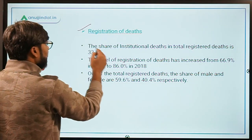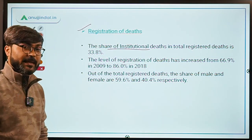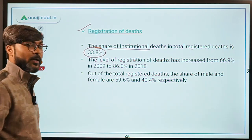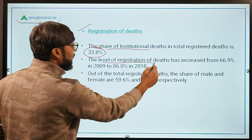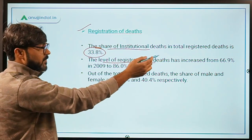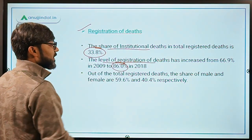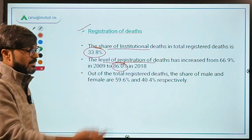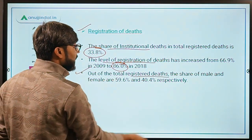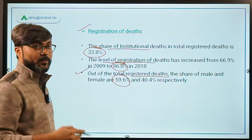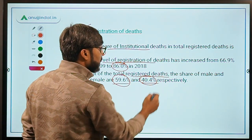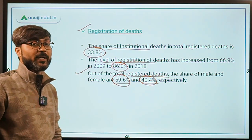Regarding registration of deaths: the share of institutional deaths in total registered deaths is 33.8%. The level of death registration has increased from 66.9% to 86% in 2010 — a huge increase. Out of total registered deaths, the male share is 59.6% while the female share is 40.4%.